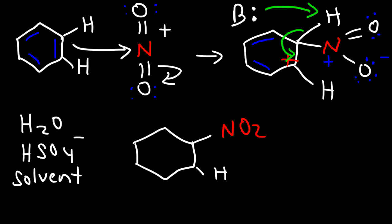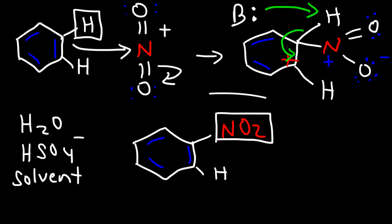Now we have nitrobenzene. You can see that the net effect is that we replaced a hydrogen atom with an electrophile. That's the mechanism for the nitration of benzene to produce nitrobenzene.